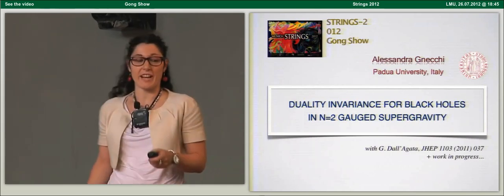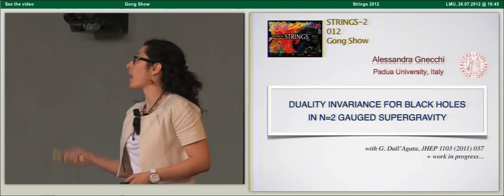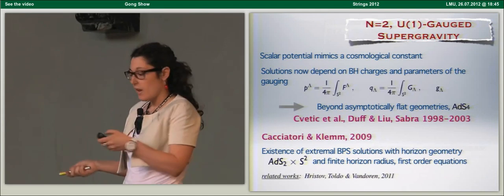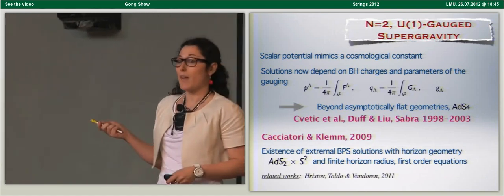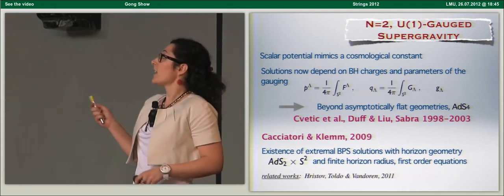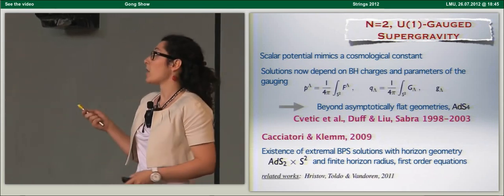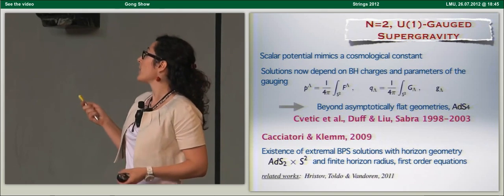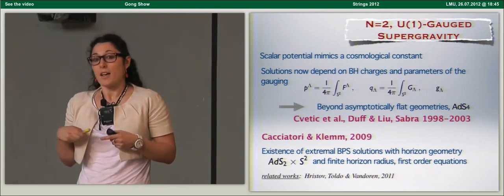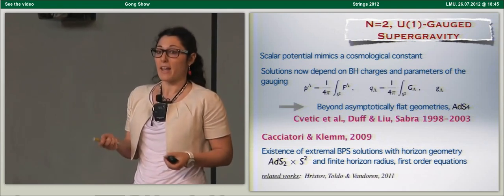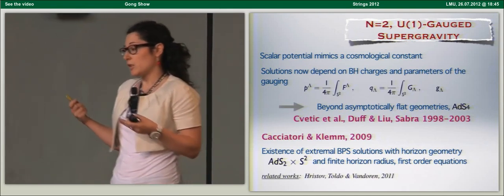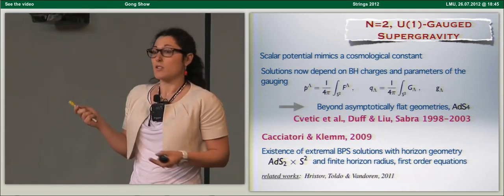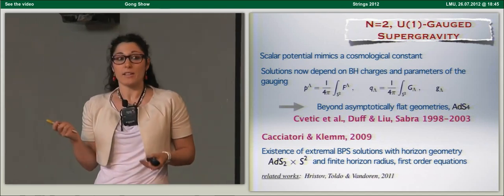I'm going to present some work on black holes in gauged supergravity done in collaboration with Jan Guido de Lagata. We considered theories of N=2 supergravity with U(1) gauging, because a scalar potential appears that mimics the cosmological constant and allows the study of black hole solutions in asymptotically curved geometries like AdS4. These solutions might have scalars with a non-trivial profile. These black holes are also stable, so they might play a role in the destabilization of vacua in the context of the string landscape.